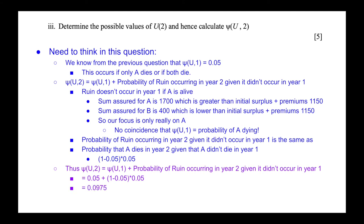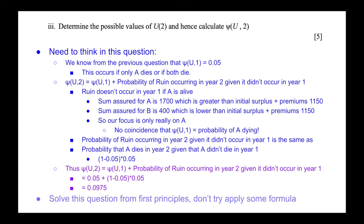The key takeaway is that you need to solve this from first principles rather than applying standard formulas. Many standard ruin theory assumptions were broken here: premiums received at the beginning, claims paid at the end. We handled it by brute force, which was manageable because there were only two policies.